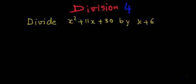So here we have an expression which is x squared plus 11x plus 30 which needs to be divided by x plus 6. The first step in doing division of complex expressions is to arrange both the expressions in the descending order of their powers or in the descending order of the indices of the variables.